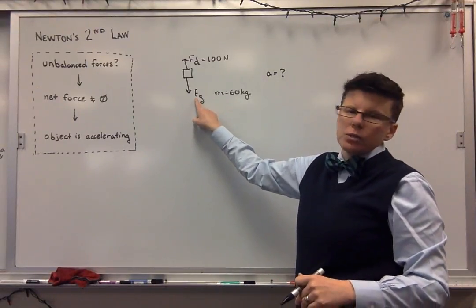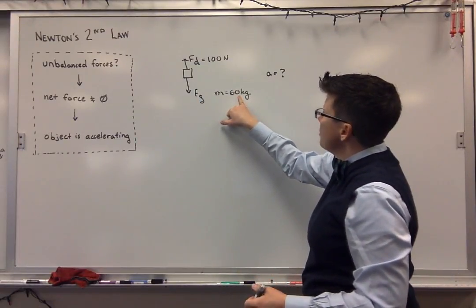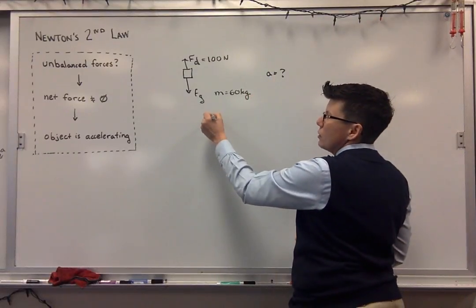The gravitational force is the object's mass times the acceleration of gravity. Here's how I'm going to find this. The acceleration, Newton's second law, says this.